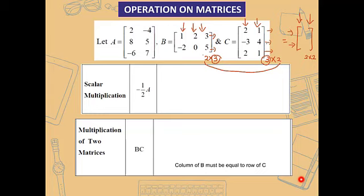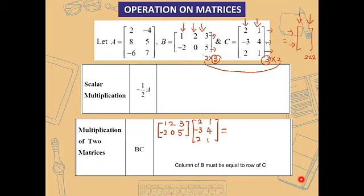It's slightly more difficult compared to addition and subtraction, but don't worry, we will go slow so that you can understand. First, copy down matrix B: [1, 2, 3; -2, 0, 5], and we're going to multiply with matrix C: [2, 1; -3, 4; 2, 1]. As taught earlier, B×C is going to be a 2×2 matrix, meaning the answer will have 2 rows and 2 columns.